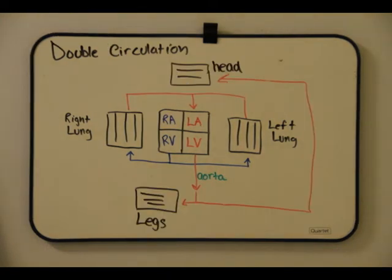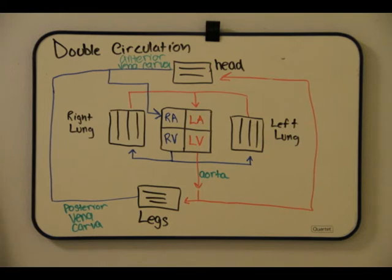After releasing oxygen in the arms or legs, the capillaries converge into the vena cava, which then continues back to the heart to the right atrium, where blood is then pumped into the right ventricle and the cycle repeats again.